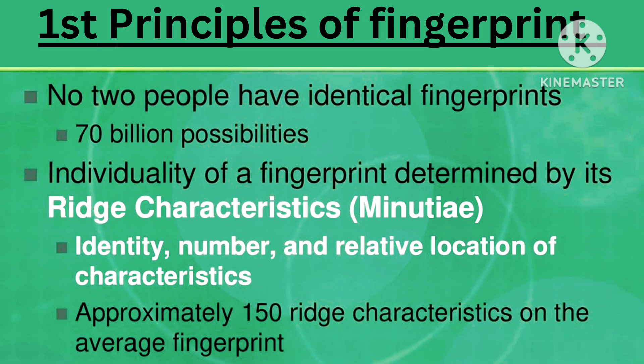Now let us discuss the Principles of Fingerprint. The first principle is that no two people have identical fingerprints — there are 70 billion possibilities.